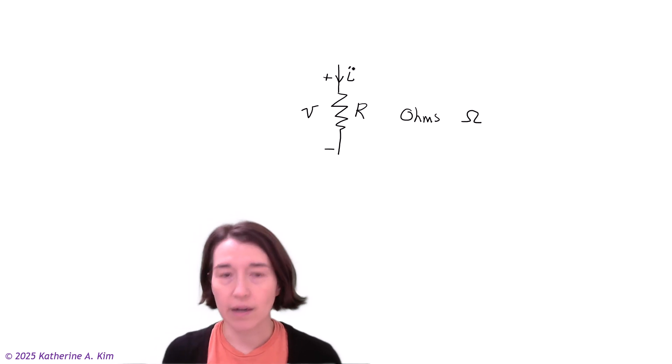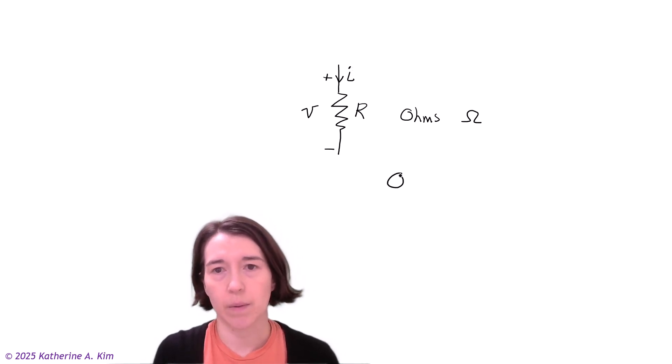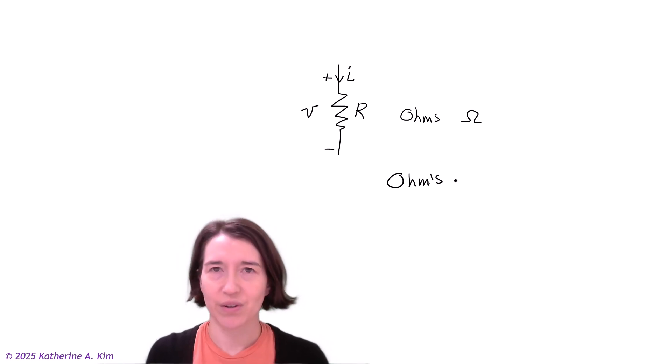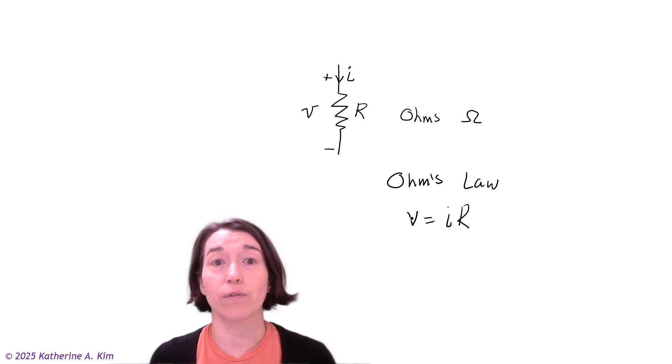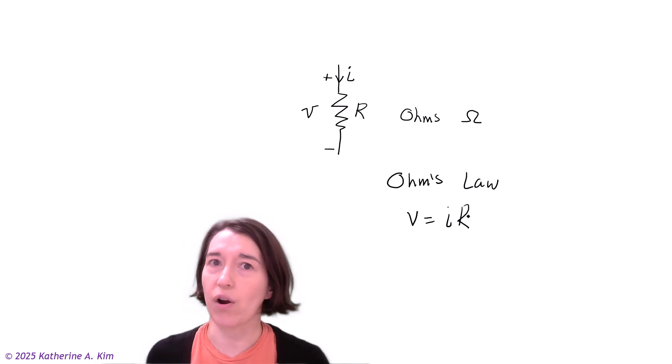Ohm's law—Ohm is someone's name, the person who discovered this—is V equals IR, where V is the voltage over the resistor, I is the current through the resistor, and R is the resistance.